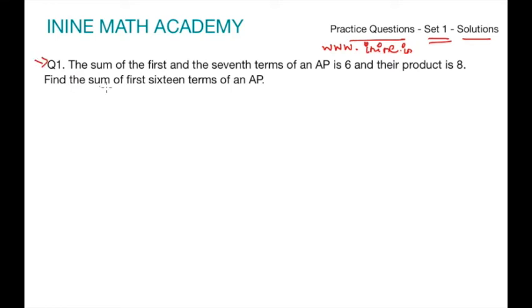Question number 1 of set 1: The sum of the first and seventh terms of an AP is 6 and their product is 8. Find the sum of the first 16 terms of an AP. What is more important in such questions is we need to understand what exactly is given in the question. They are talking about sum of the first and seventh term of the AP. First term we denote by A, seventh term by A7, and this sum is equal to 6.